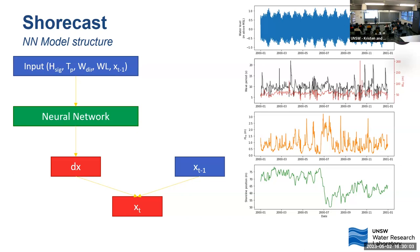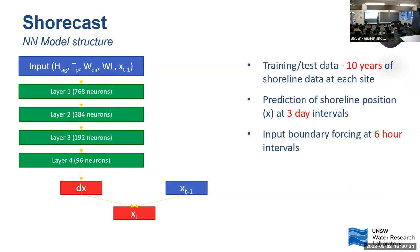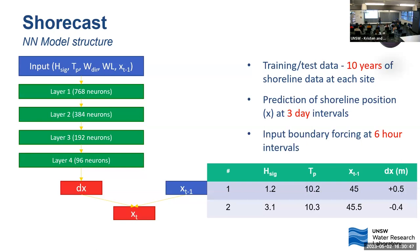The inputs were wave height, period, wave direction, water level, and the antecedent beach position — the X term — fed into a neural network to predict dX. We learn we can't predict X very well directly, because where a beach is going depends heavily on where it currently is. We predict dX, then feed back the last known shoreline position during training — or the last predicted shoreline during the modeling run — to get the updated position X(t). He had four layers, a couple of neurons, predicting three days ahead with input data every six hours.